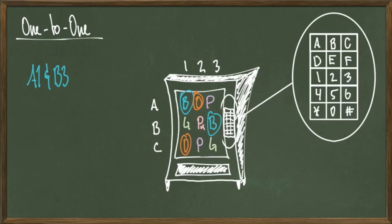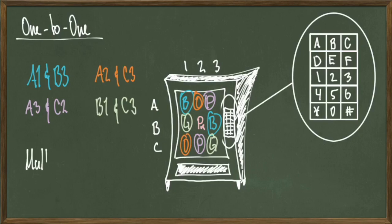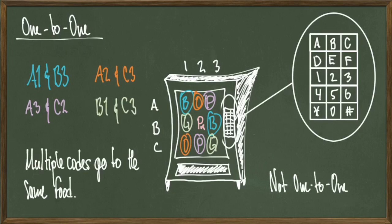Here, we see that the codes A1 and B3 give me the blue item. Reading further into this, we see that A2 and C3 give me the orange, A3 and C2 give me the purple, and B1 and C3 give me the green. So here, we can't exactly backtrack. If I knew that I had a blue item, I can't tell you if you punched in the code A1 or B3. This is because I have multiple codes that go to the same food item. So backtracking this function is impossible, which means that this function is not 1 to 1.